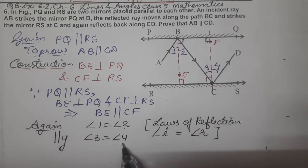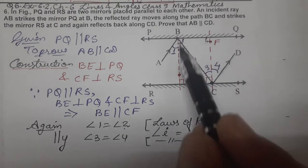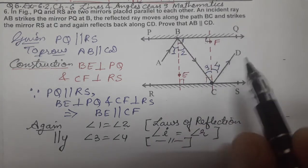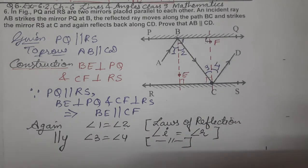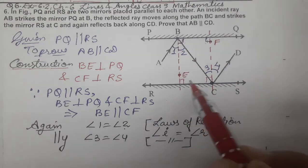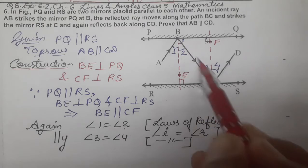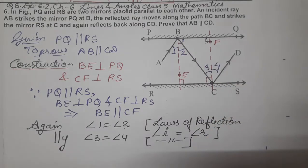Similarly, angle 3 equals angle 4. Angle 3 is the incident ray to this mirror, reflected gives angle 4. Same reason for both.